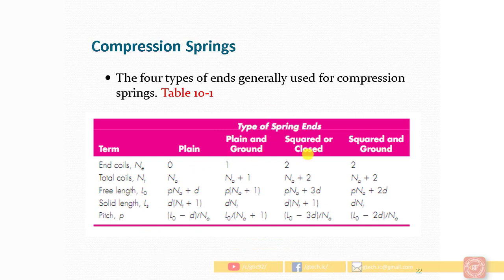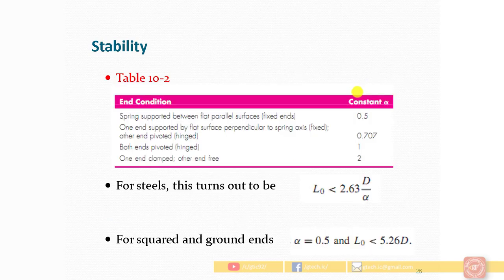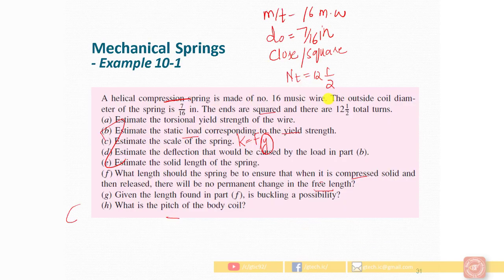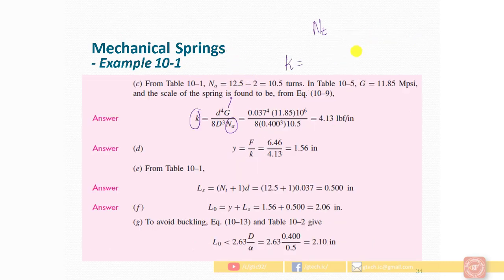From table 10/1, for square and closed ends: end coils = 2, and total coils = active coils + 2. Therefore, active coils = total coils − 2 = 12.5 − 2 = 10.5. The active number of coils is 10.5.